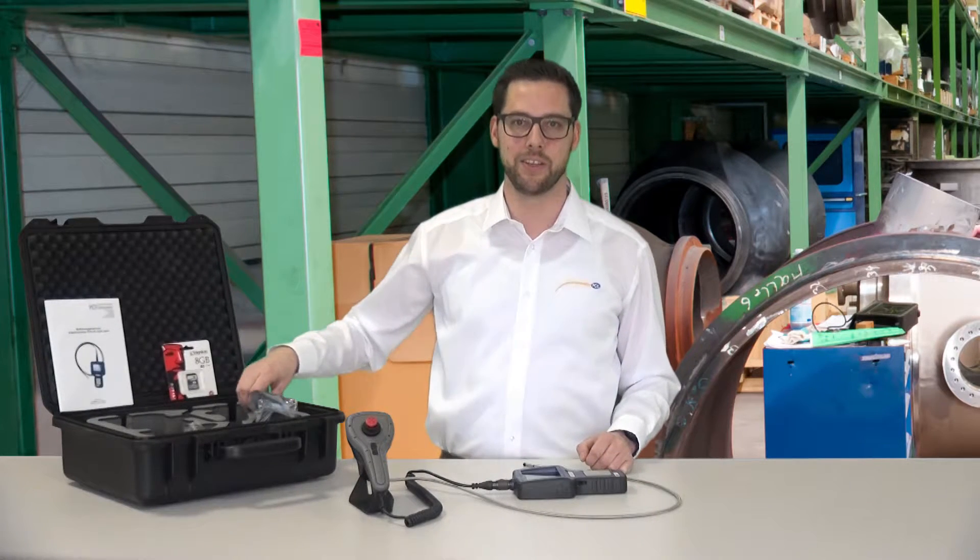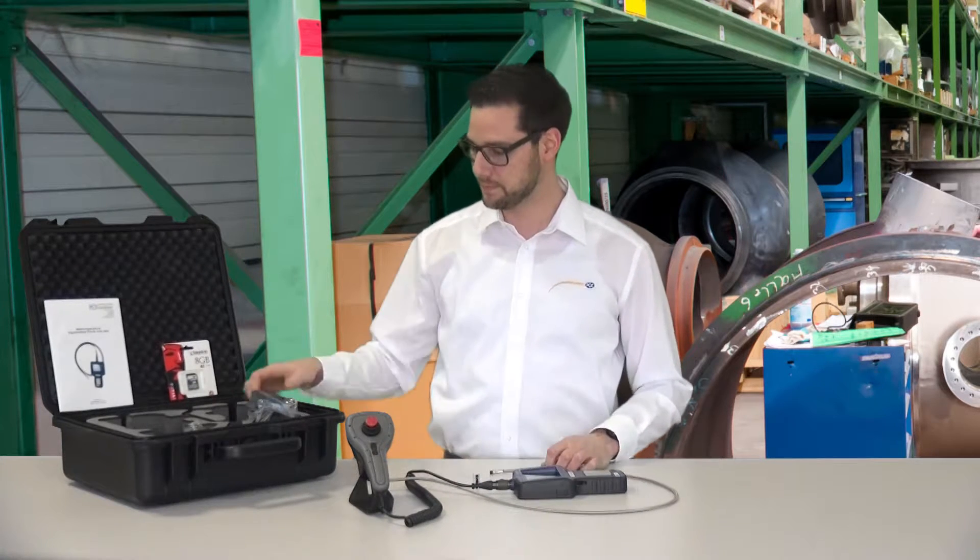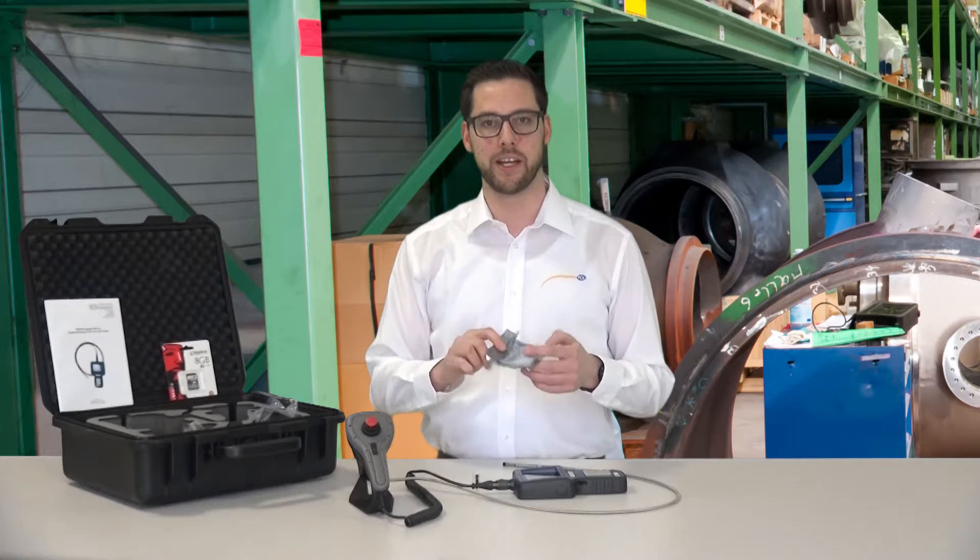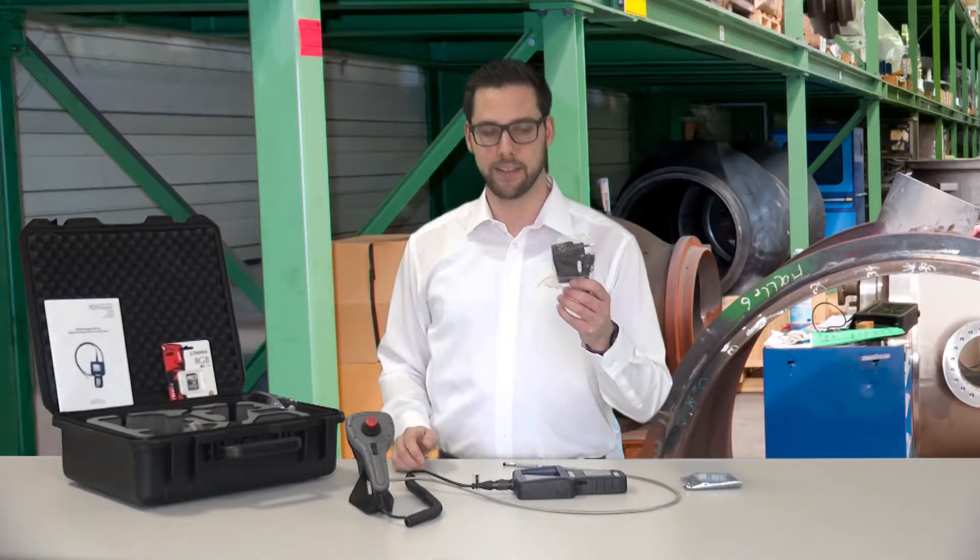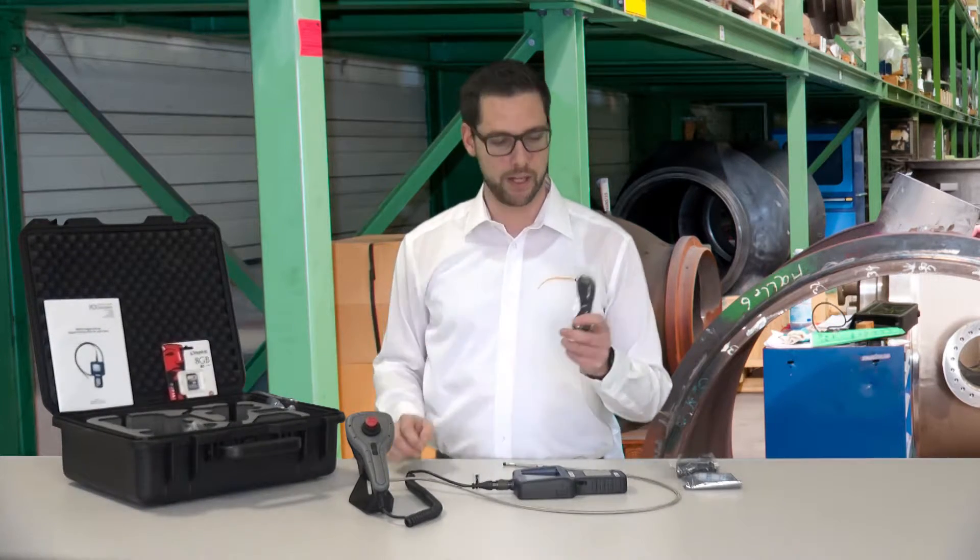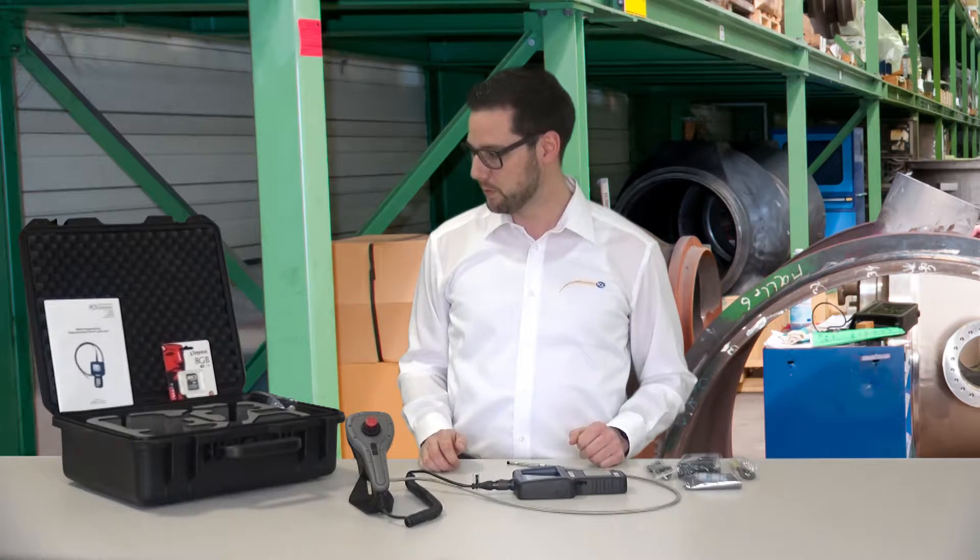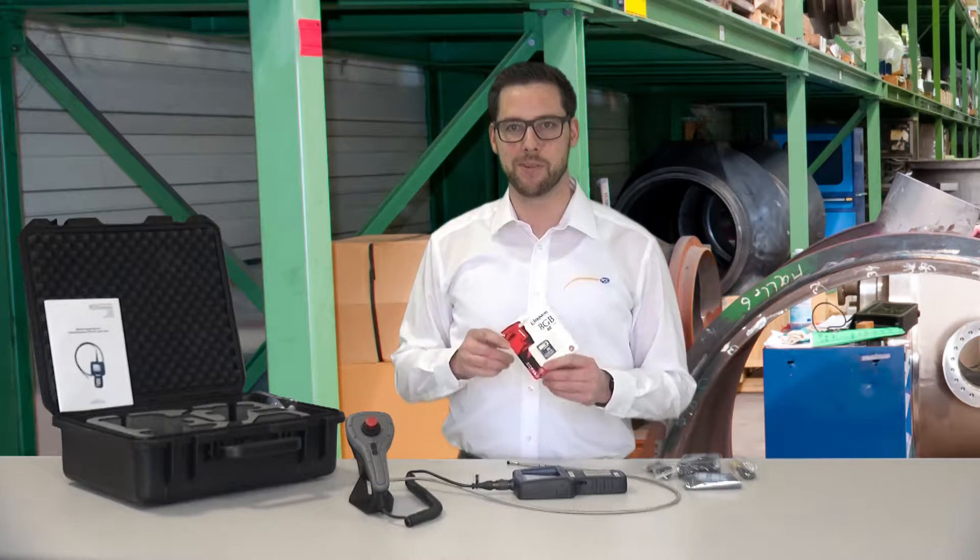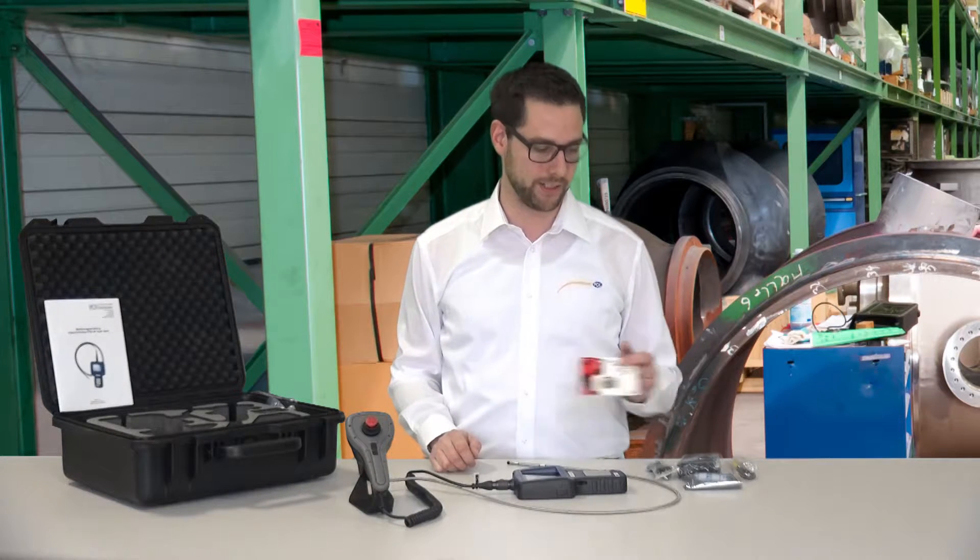In the delivery of the endoscope is a 70 degrees mirror which you can screw to the camera head, cleaning agents and a cleaning cloth to clean the lens, a charger, a mini USB cable to connect the endoscope to a computer, and a video cable to connect it to a TV or larger screen. Also in the delivery is an 8GB memory card with which you can save the pictures directly onto the endoscope.